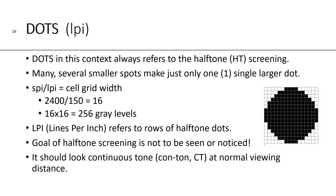So we have discussed pixels and we've discussed spots. Now we need to talk about dots, which are measured in lines per inch, or LPI. Dots in this context always refers to the halftone dot, abbreviated HT for screening. Many smaller spots make just one single larger halftone dot. If you take the spots per inch and divide by the lines per inch, you get the cell grid width. For example, 2,400 spots per inch divided by 150 lines per inch gives you a cell or grid that is 16 by 16, which allows 256 gray levels.